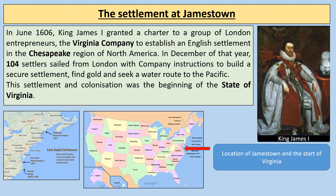In June 1606, King James I granted the charter to a group of London entrepreneurs, the Virginia Company, to establish an English settlement in the Chesapeake region of North America. In December of that year, 104 settlers sailed from London with instructions to build a secure settlement, find gold, and seek a water route to the Pacific Ocean. This settlement and colonisation was the beginning of the state of Virginia. You can see an image of King James I and some maps showing those early settlement colonisations of America.